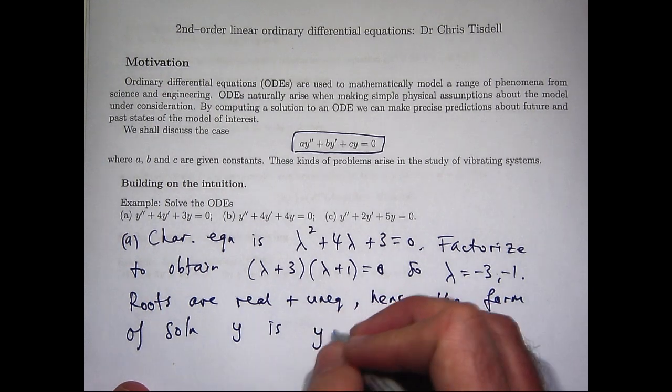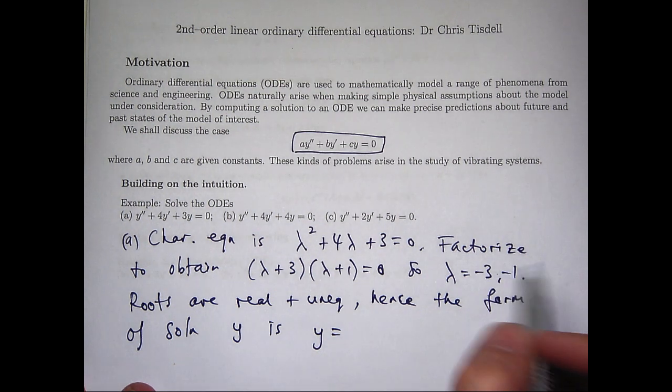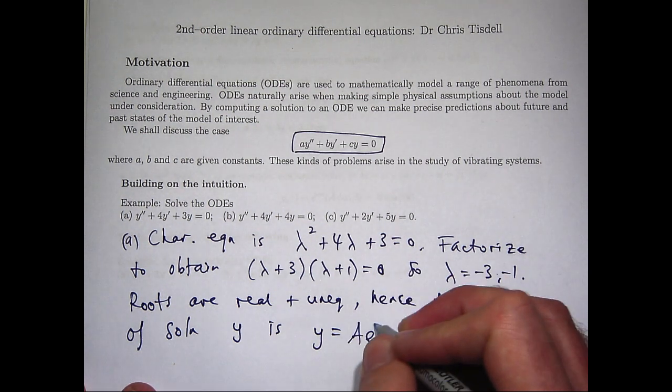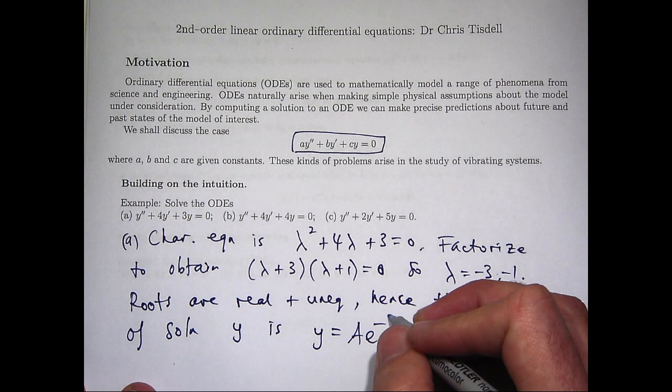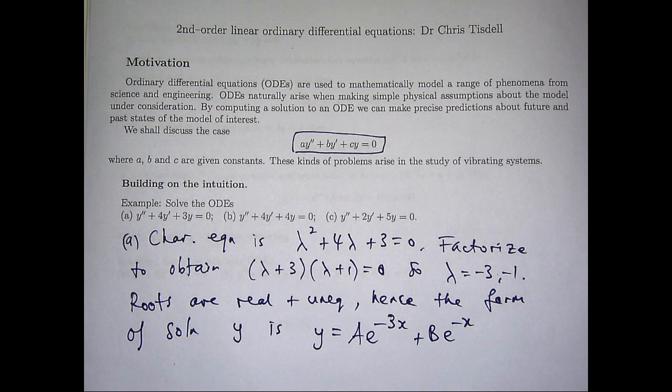It's just a linear combination of exponential functions with these in the exponent. So big A and big B are arbitrary constants here. If we had some initial conditions, then we could calculate big A and big B, but we don't have that information here. So that's about as good as we can get it.